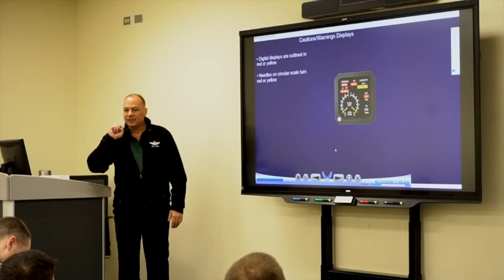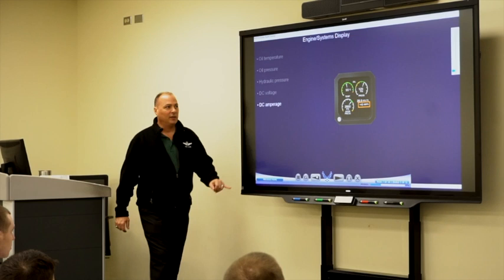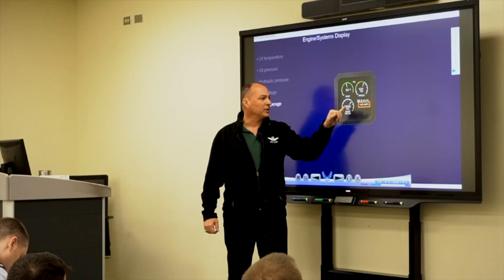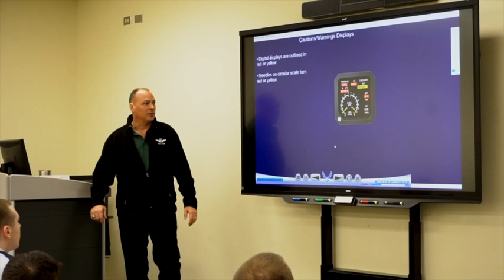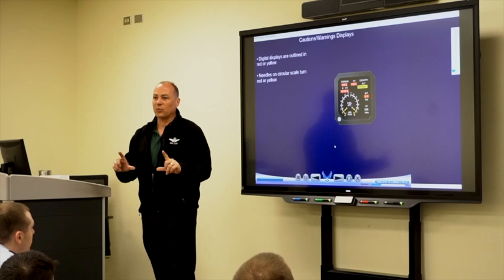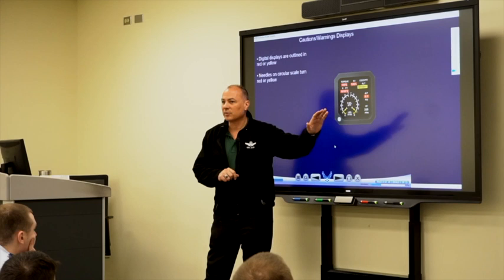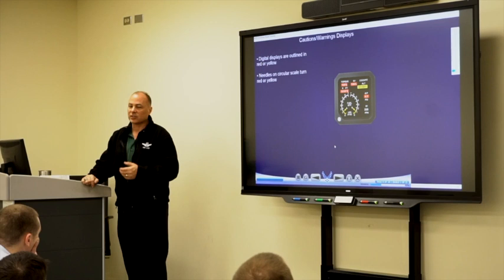Typically in the T6, if something exceeds or falls below the green band on your engine systems display or alternate/primary engine data display, you'll get enunciators — red boxes, yellow boxes, or colored needles. Those may also correspond to a caution and warning system light on the CWS panel — though not always. For example, if you lose all hydraulic pressure, you won't get a CWS panel light; you the pilot have to see that.